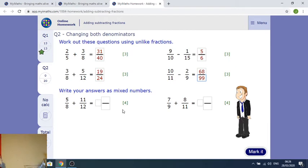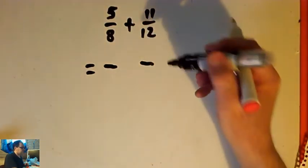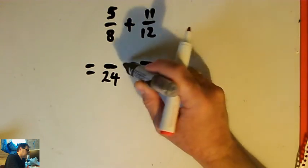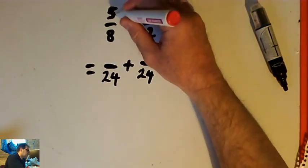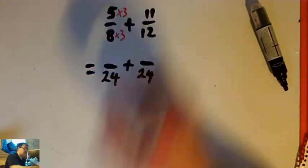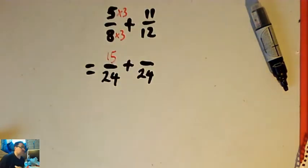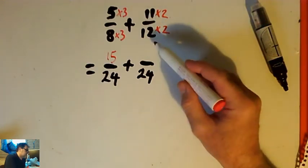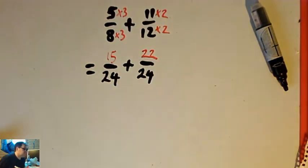The last two questions ask you to write your answers as mixed numbers. First is 5 eighths plus 11 twelfths. I need a common denominator — both 8 and 12 go into 24, so I write them both as fractions out of 24. To get from eighths to twenty-fourths I multiply by 3 over 3: 5 eighths is the same as 15 twenty-fourths. Then 11 twelfths — I multiply by 2 over 2 to go from twelfths to twenty-fourths — so 11 twelfths is the same as 22 over 24.